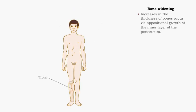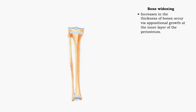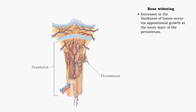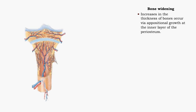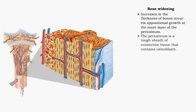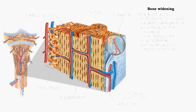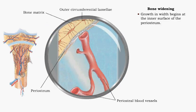Bone thickness can only increase via appositional growth at the inner layer of the periosteum. The periosteum is a tough sheath of connective tissue that contains osteoblasts. Growth in diameter occurs between the periosteum and outer circumferential lamellae.